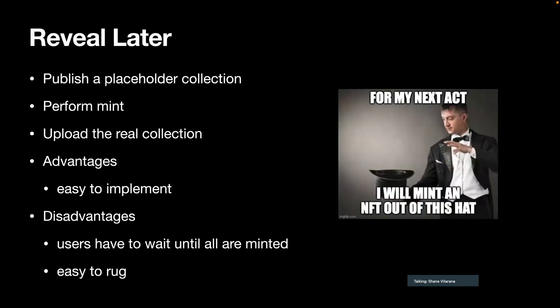Reveal later is very similar. Instead of publishing to a private IPFS node first, the creator publishes a placeholder collection to IPFS — generally an animated GIF that rolls through a sampling of the NFTs. The user performs the mint and just gets that random sample placeholder, not the real NFT. They have to wait for the creator to upload the real version. The advantage is again the developer doesn't have to do anything, but the smart contract must have the ability to update the token URIs. The disadvantage is the user has to wait until the creator uploads the real collection.